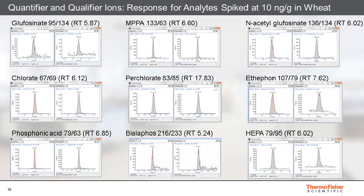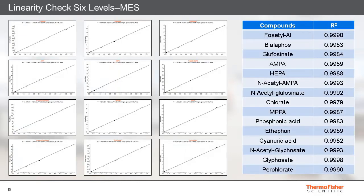This slide shows the same information for the other compounds included in the same chromatographic run. Retention times are extremely stable. In calibration plots, the response for 12 compounds is linear over the range equivalent to 4 to 200 nanograms per gram with satisfactory R-squared values.